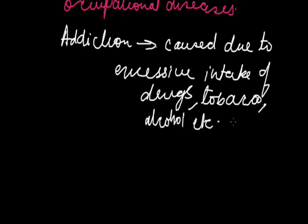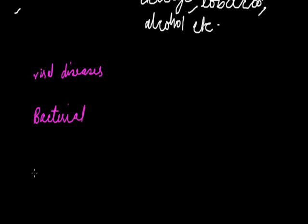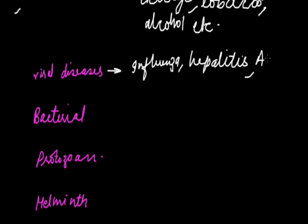Now, various infectious diseases can be categorized by their agents. Viral diseases include influenza, hepatitis, AIDS, rabies, and polio. Bacterial diseases include tuberculosis, cholera, typhoid, anthrax, plague, and pneumonia. Protozoan diseases include malaria and dysentery. Helminth diseases — caused by worms — include teniasis, ascariasis, and elephantiasis.